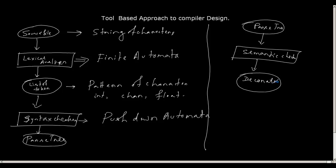Why is it called a decorated parse tree? Because we have populated much information into the parse tree — we have decorated it. For example, semantic checks involve checking for undefined symbols, meaning a symbol has been used but not defined. To do this check, we need to populate the parse tree with what we call a symbol table. Through a symbol table implementation, we can perform semantic checks.